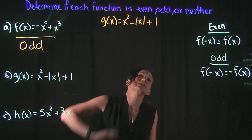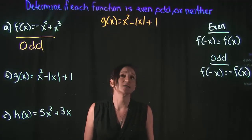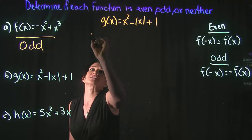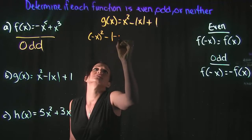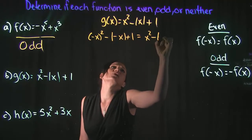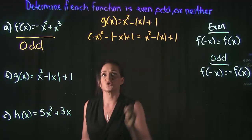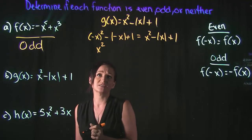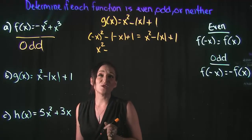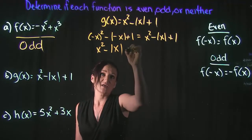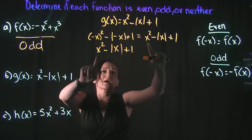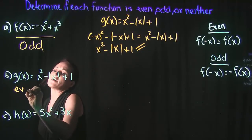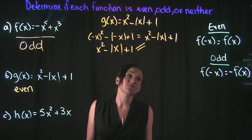For our next example, g of x equals x squared minus the absolute value of x plus one. Let's test to see if it's even by plugging in negative x for every x. Negative x squared becomes positive x squared. The absolute value of negative x becomes positive x. So we get x squared minus the absolute value of x plus one — which is the exact same function. So this is definitely an even function.